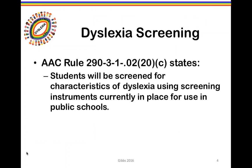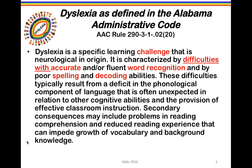Dyslexia screening is required in the Alabama Administrative Code. The code states that students will be screened for characteristics of dyslexia using screening instruments currently in place for use in public school. We're going to be talking about screening instruments today so that you might make some choices in your district regarding the instruments that will most benefit your students. The Alabama Administrative Code Dyslexia Amendments include a definition of dyslexia.